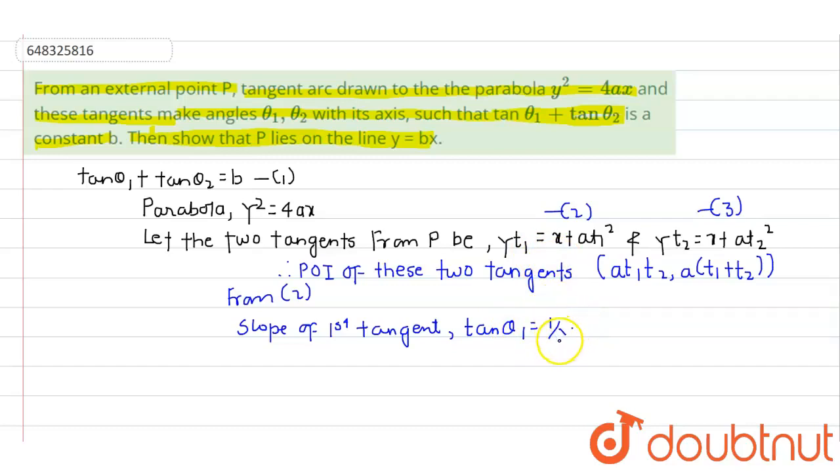So slope we got as 1/t₁. Similarly, slope of second tangent making angle θ₂ will be tan θ₂ = 1/t₂.